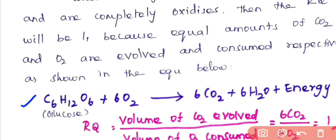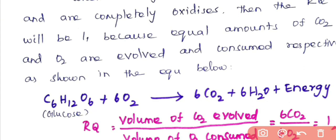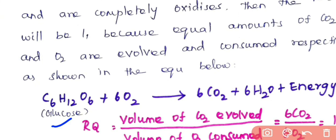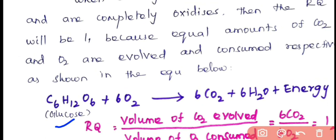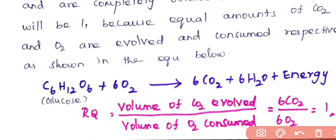Consider the substrate glucose: C₆H₁₂O₆ plus oxygen gives carbon dioxide, water, and energy. First, balance the reaction. Once balanced, calculate the volume of carbon dioxide evolved and the volume of oxygen consumed. The formula to calculate RQ is: volume of CO₂ evolved divided by volume of O₂ consumed. The volume of carbon dioxide evolved is 6 CO₂.